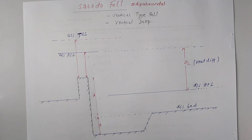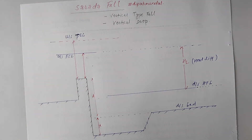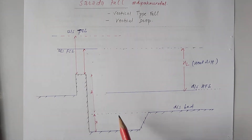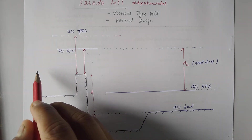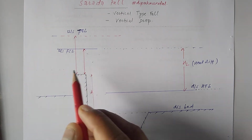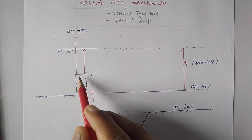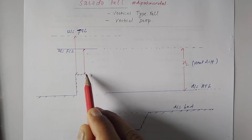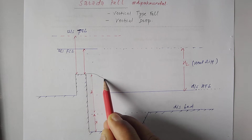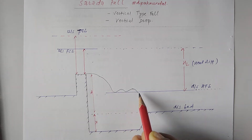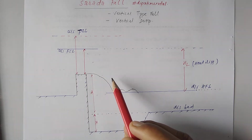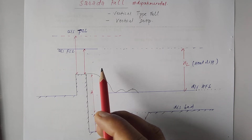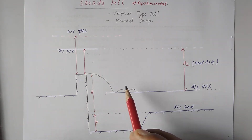In the figure of a Sarda fall, water comes from upstream and reaches this top crest part, then falls from there. This is the fall of water from the crest. Whenever the water falls from here, we are going to see what vertical falls actually do.